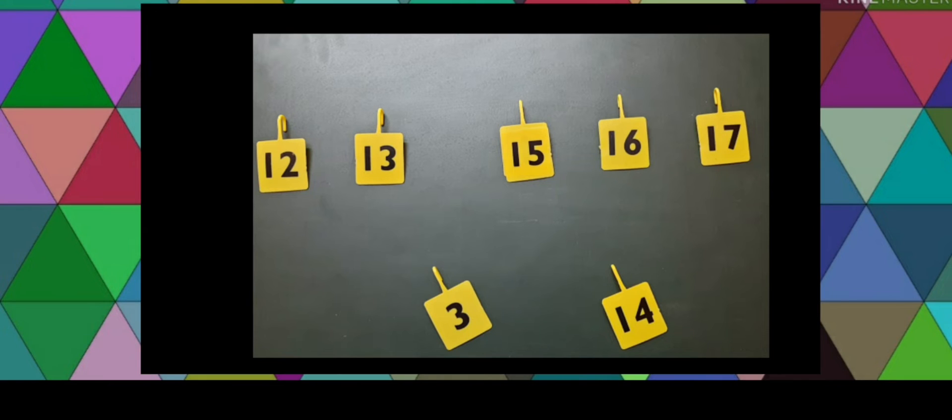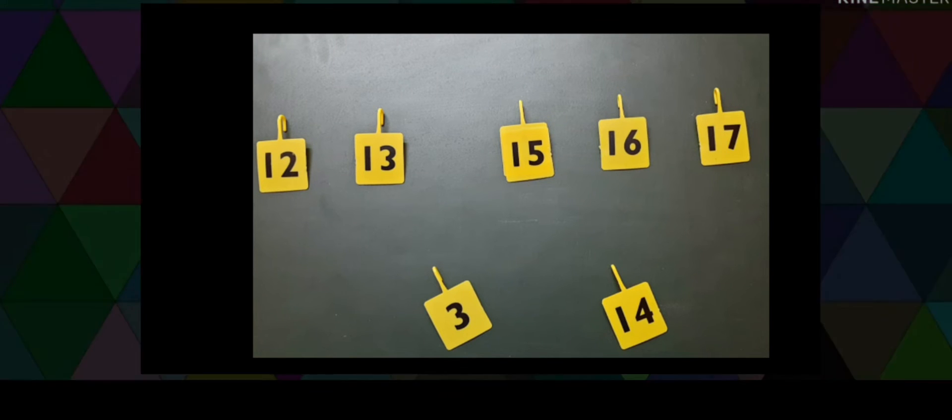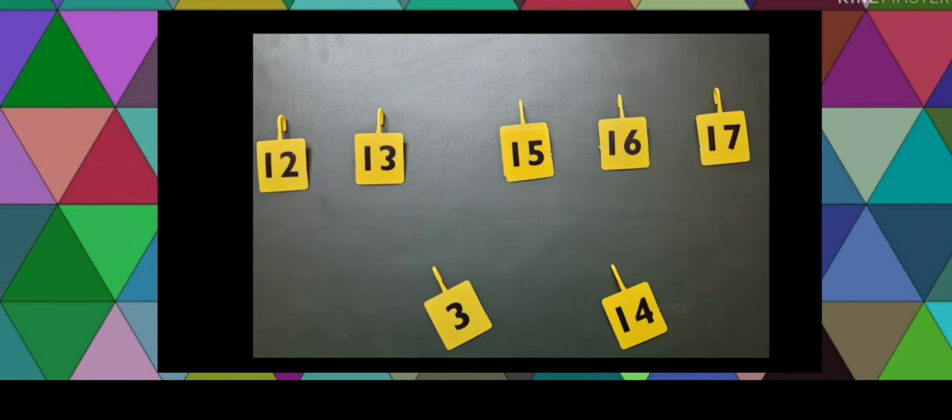Here the numbers that are given are 12, 13, then there is a blank space and the other numbers are 15, 16 and 17. Only two options are given to you and they are number 3 and 14. You have to guess the correct option. The options are in front of you. So now think what will be the correct answer? Yes, you are very much right.